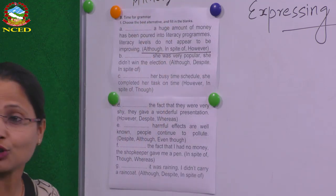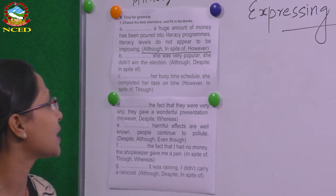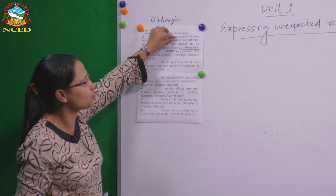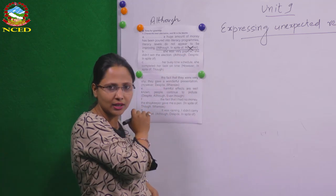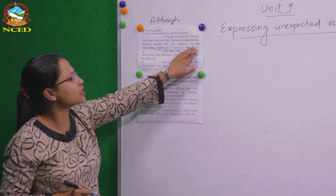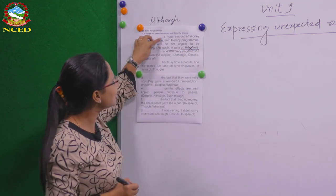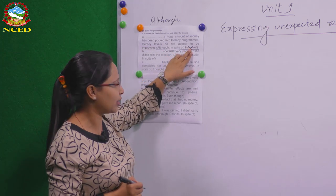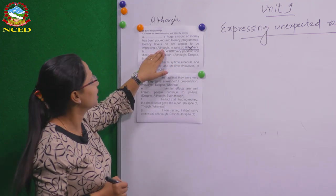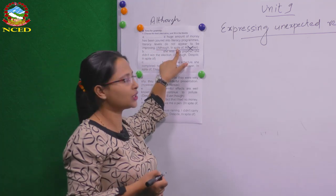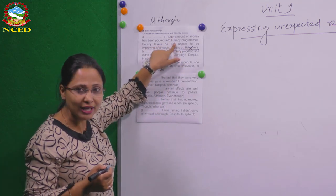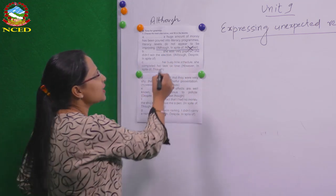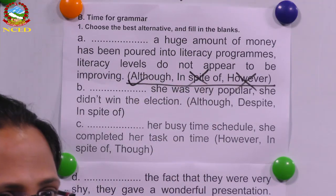'Although' is the right answer. Why? The blank is before a situation — a clause follows it. We can't use 'however' because 'however' goes before the unexpected result, not before the situation. We can't use 'in spite of' either, because 'in spite of' comes with a noun phrase, not a clause. So the right answer is 'although.'